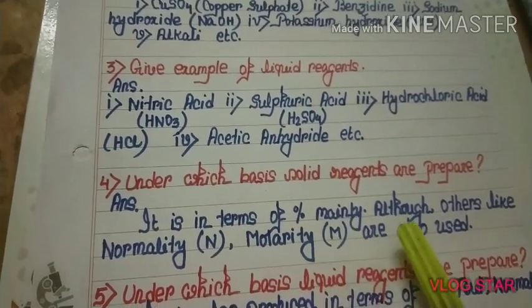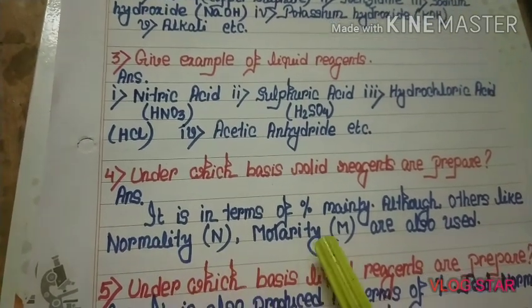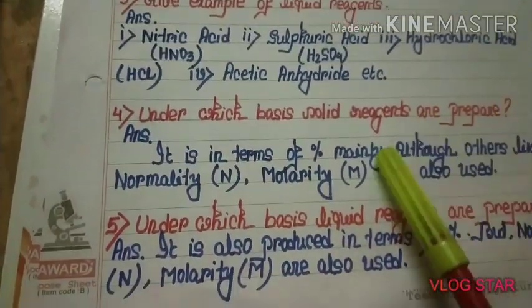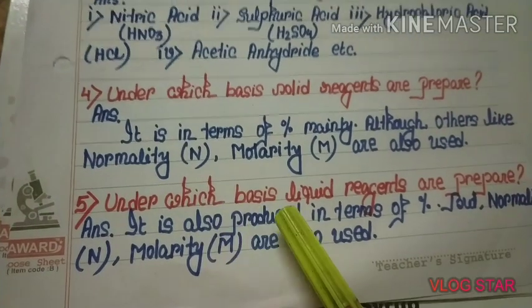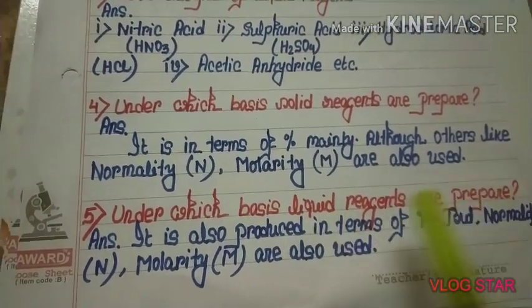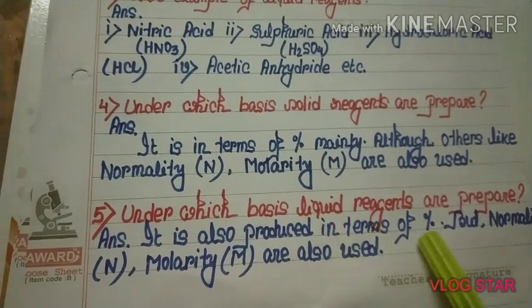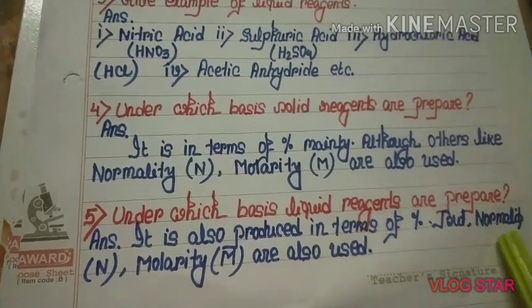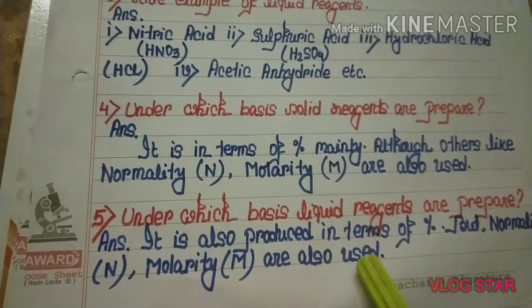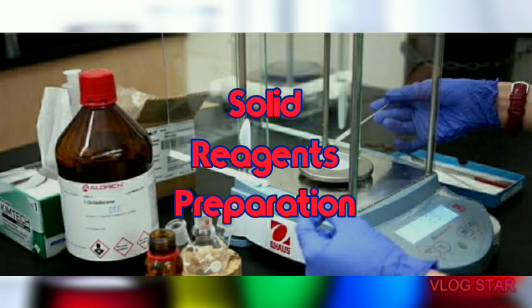Under which basis are solid reagents prepared? They are prepared mainly in terms of percentage, although others like normality (N) and molarity (M) are also used. Liquid reagents are also prepared in terms of percentage, but normality (N) and molarity (M) are also used.